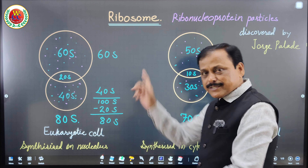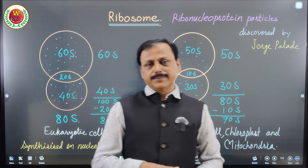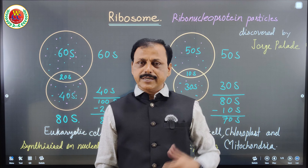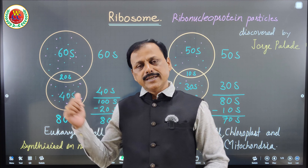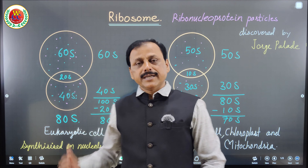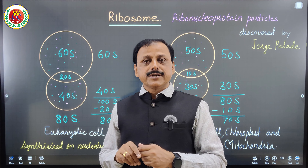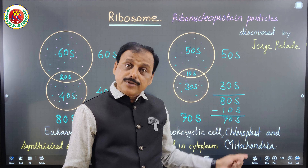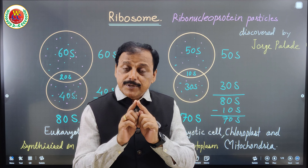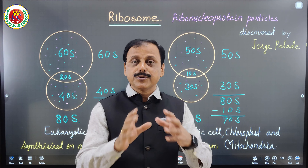Once again, to recap: ribosomes are the factory of protein synthesis. They are 80S in eukaryotic cells and 70S in prokaryotic cells. In eukaryotes they are produced in the nucleolus; in prokaryotes they are produced in the cytoplasm. 80S ribosomes are found only in eukaryotes, while 70S ribosomes are found in prokaryotes as well as in the chloroplasts and mitochondria of eukaryotes.